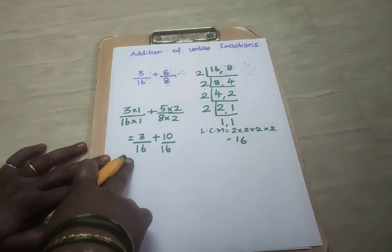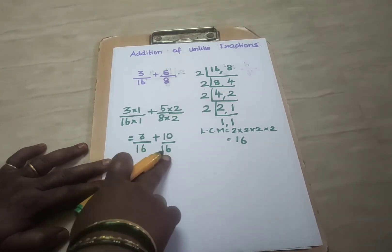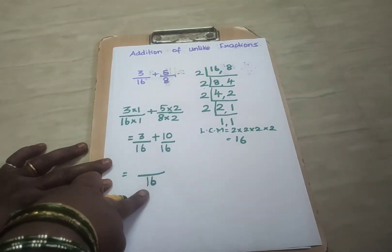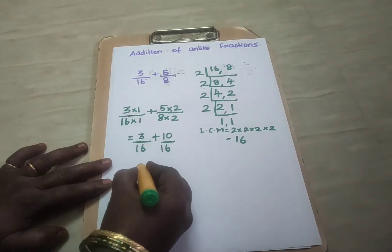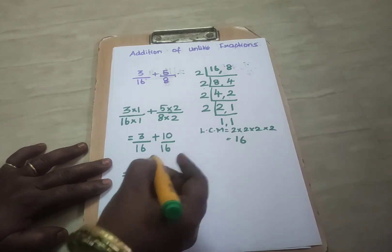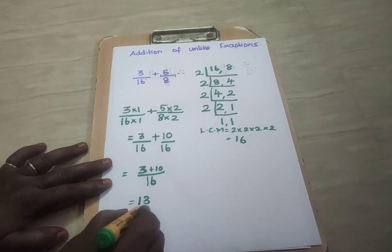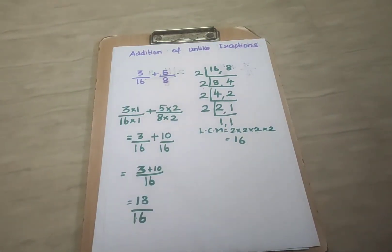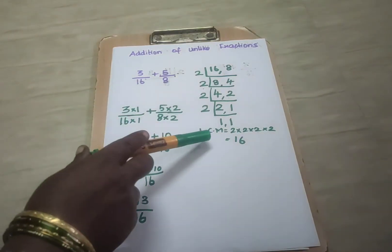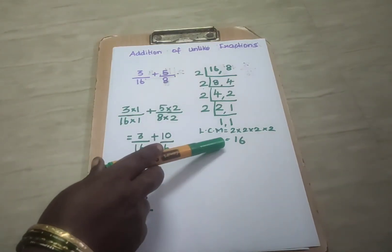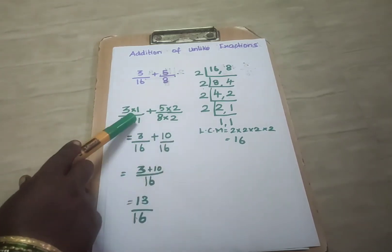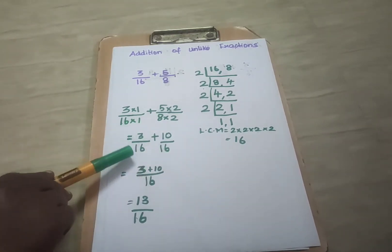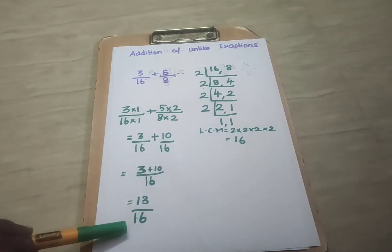Now both the denominators are same. After getting the same denominators, you have to add the numerators. First write the denominator at the bottom. Then add the numerators: 3 plus 10 is 13 by 16. So this is the method for doing the addition. First find the LCM, then multiply with the fraction so that you get the same denominator, then add the numerators and you will get the answer.